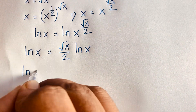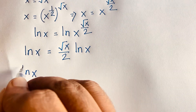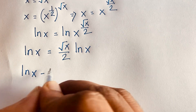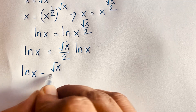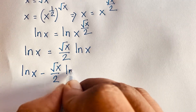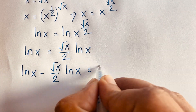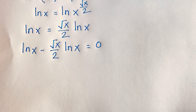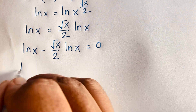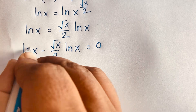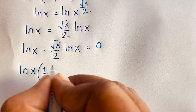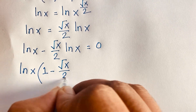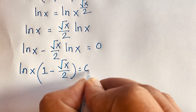Now I move this term to the left side — it becomes negative — so we have ln x minus square root x over two times ln x equals zero. Factoring out ln x, we get ln x times the quantity one minus square root x over two equals zero.